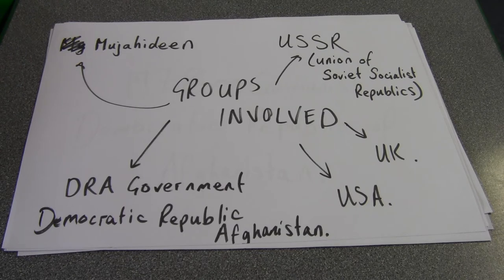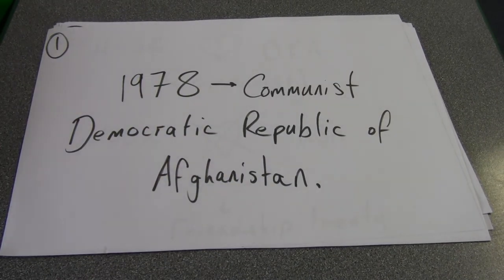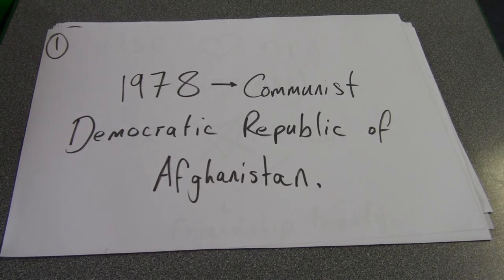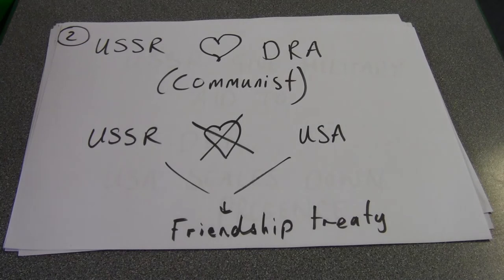In terms of the conflict before 2001, we go all the way back to 1978. In 1978, the Communist Democratic Republic of Afghanistan took control of the country, its government and its policies. It's really important to look at the word 'communist', because that's vital for understanding the different allegiances in this conflict in the lead-up to 2001. We've got the USSR and the DRA — I've put a love heart between them because they're allies, simply on the basis that they're both communist countries.